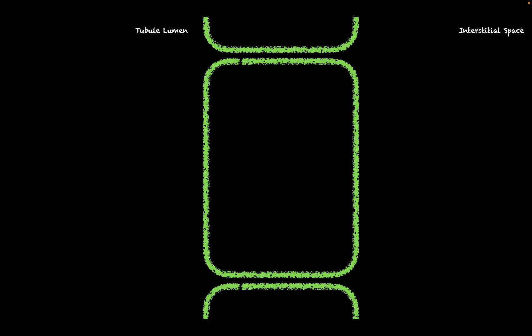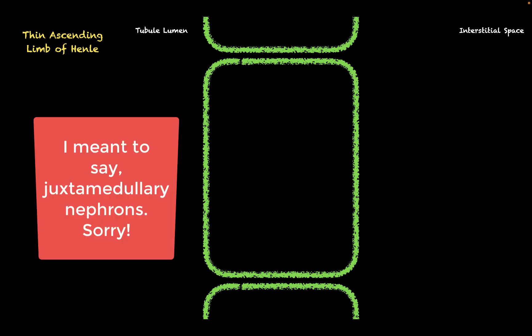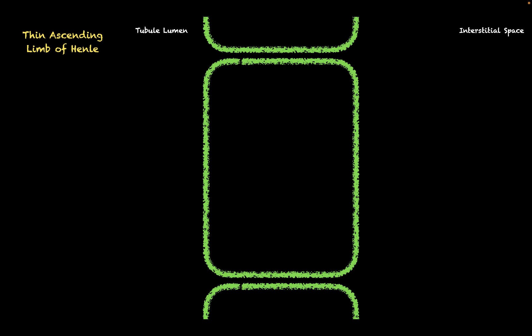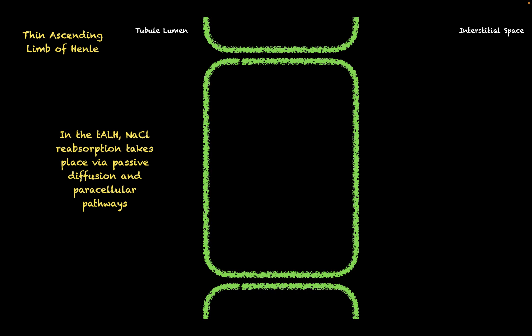Now let's talk about the thin ascending limb of Henle. The thin ascending limb is only present in juxtaglomerular nephrons — the nephrons that dive deep into the kidney. In the thin ascending limb, the cells are very permeable to sodium chloride but impermeable to water. So sodium chloride reabsorption in this segment takes place via passive diffusion and paracellular pathways.